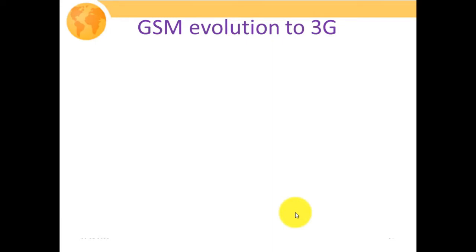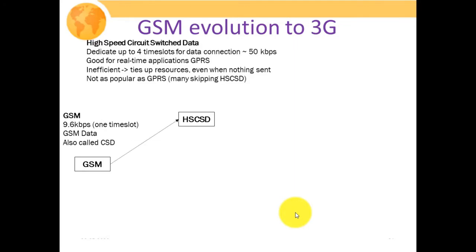This particular slide is showing the GSM evolution to 3G — how we move forward from GSM to 3G. Initially we have GSM, that is 9.6 kilobits per second in one time slot, also called CSD or circuit switched data. Then we moved forward to high speed circuit switched data, which is dedicated to four time slots for data connection to provide 50 kilobits per second.